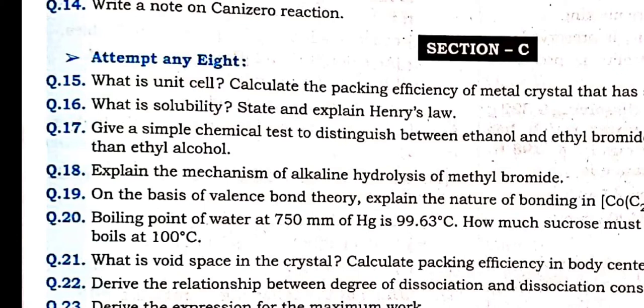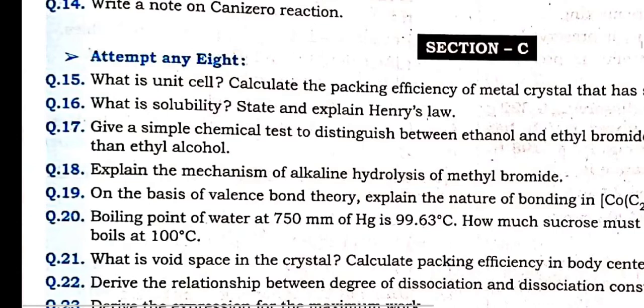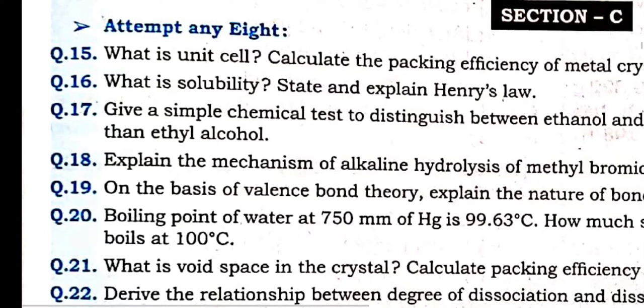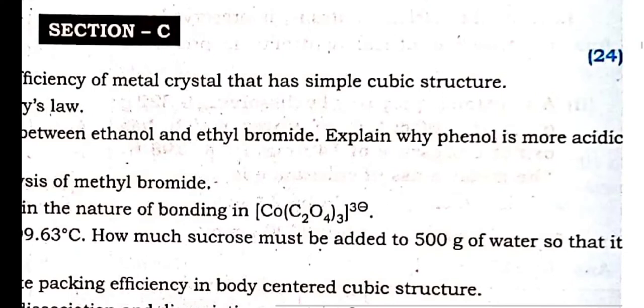Next: unit cell. Section C — 3 marks each, total 24 marks, 8 threes are 24. What is the unit cell? Calculate the packing efficiency of the metal in simple cubic — 2 marks, from solid state. What is solubility? State and explain Henry's law — solubility is directly proportional to pressure. Give a simple chemical test for distinguishing ethanol and ethyl bromide. Explain why phenol is more acidic than ethyl alcohol.